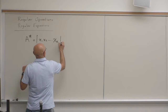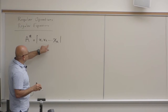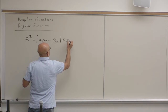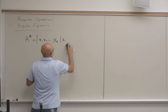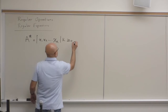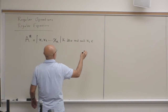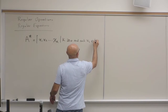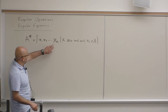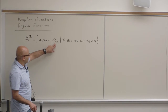So the A-star is all strings X1, X2, ..., Xk where k is greater than or equal to zero, and each Xi belongs to A. This is slightly different from the definition I gave last time. Last time I gave a definition without a limit on string length.